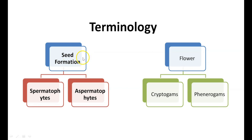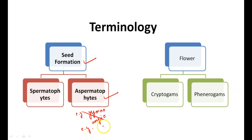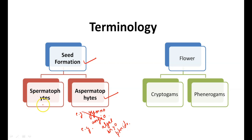Another term is seed formation. Plants which do not carry seeds are known as aspermatophytes. Examples of aspermatophytes are algae, bryophytes, and pteridophytes — they do not form seeds. Plants which carry seeds are known as spermatophytes. Examples of spermatophytes are gymnosperms and angiosperms.